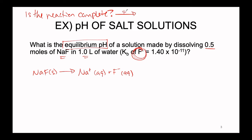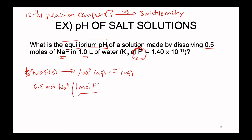The key question you need to ask yourself is: is the reaction complete? If the answer is yes — like sodium fluoride dissociating into sodium and fluoride in aqueous conditions — we are going to use stoichiometry to perform our calculations. If your reaction is reversible, then we will use the ICE table approach. We started with 0.5 moles of sodium fluoride. Since the dissociation happens in a one-to-one ratio, one mole of fluoride is generated per every one mole of NaF used up, giving us 0.5 moles of F- present in solution after complete dissociation.